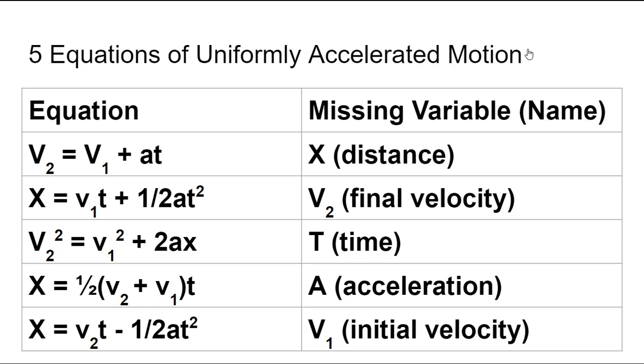So for example, if you have an equation and you're missing distance, then you are going to want to use the very first equation. If you're missing final velocity, you'll want to use the second equation. If time isn't involved, then you're going to use the third one. If acceleration is not involved, you're going to use the fourth. And if initial velocity is not involved, you'll use the fifth.